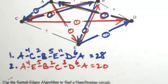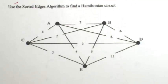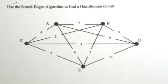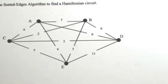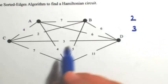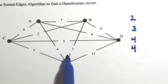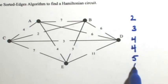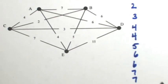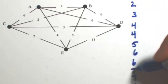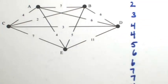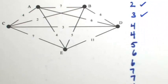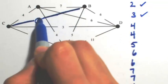Now let's look at the same graph using a different algorithm — the sorted edges algorithm. With sorted edges, we sort all edges from least to greatest. Writing them in order: 2, 3, two 4s, 5, two 6s, two 7s, and an 11 — 10 edges total. We then choose edges that don't cause 3 edges to meet at a vertex and don't create a circuit until all vertices have been used. The first two edges are always used since they can't violate either rule, so we use the 2 and the 3.